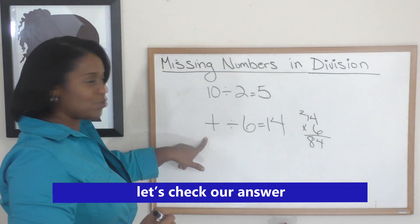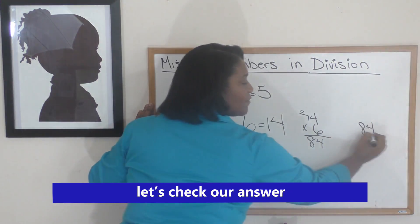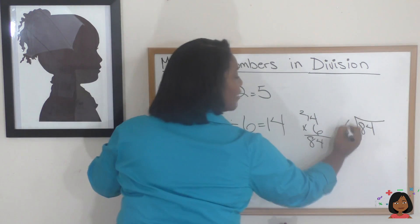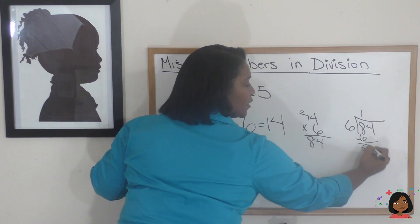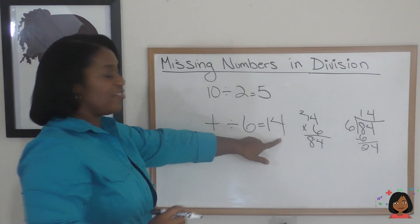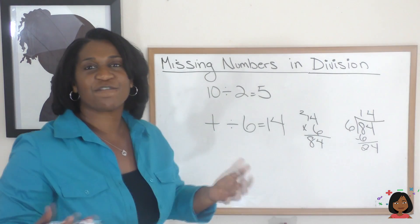But let's just check it to make sure. What's 84 divided by 6? 84 is our dividend, so it goes on the inside. Our divisor is 6, so that'll go on the outside. 6 into 8 goes 1 time, and 6 into 24 goes 4 times. So there you go, there's the right answer.